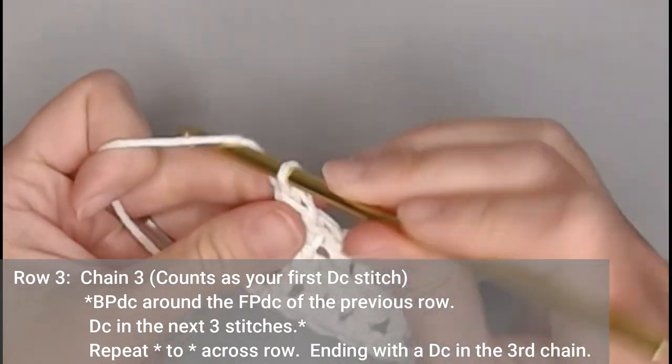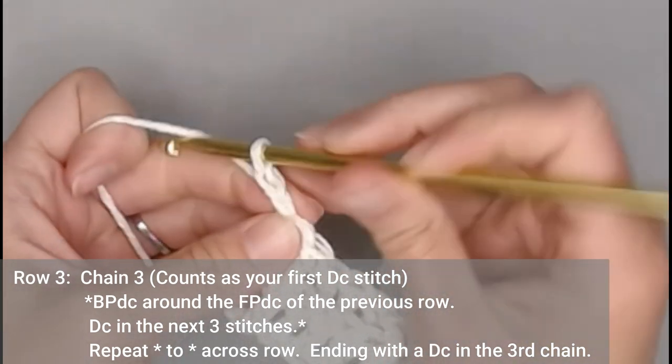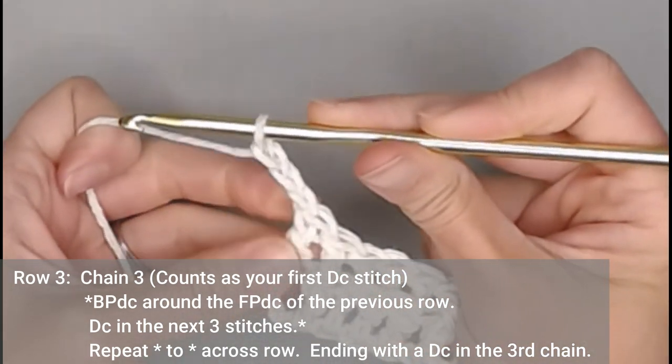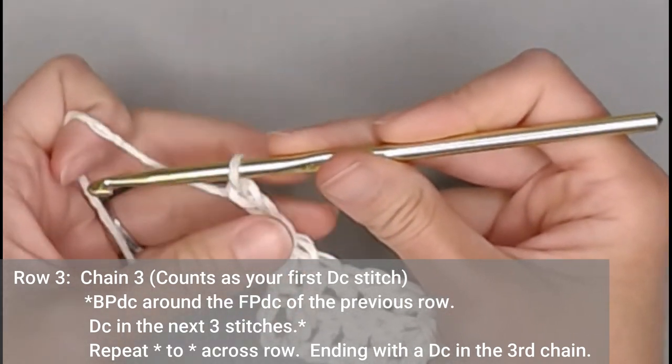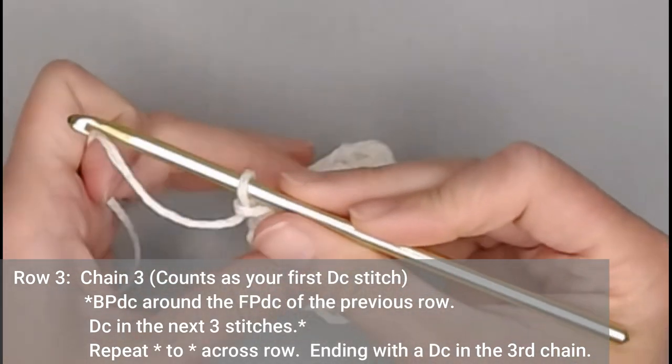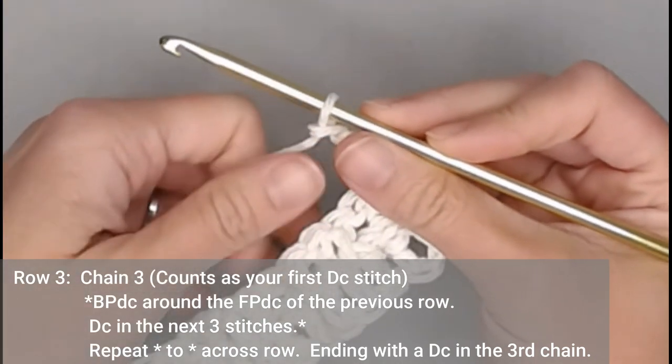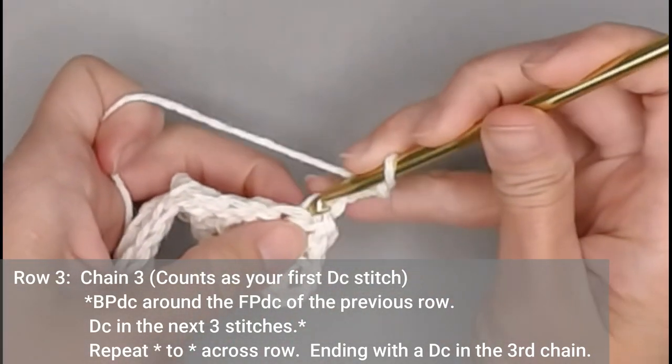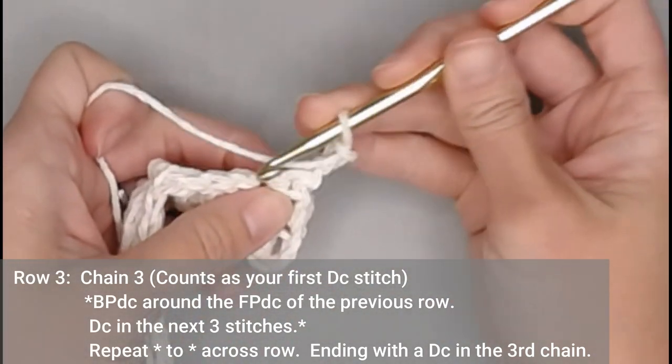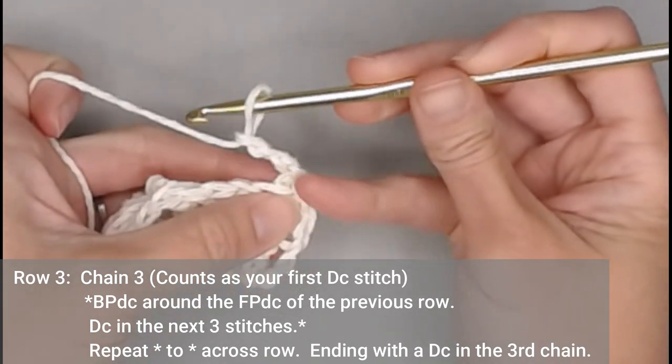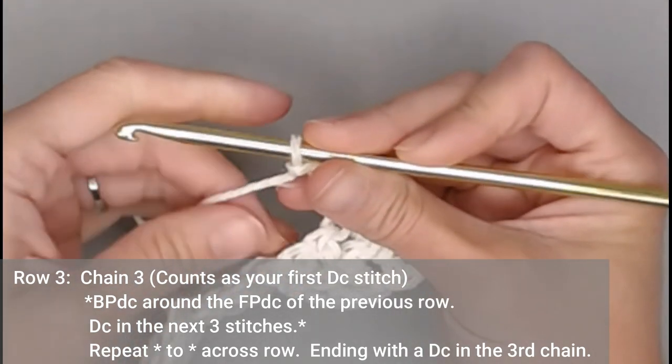For row three, again, we chain three. One, two, three. It's how you begin every row with a chain three. That chain three counts as a stitch of every row. We will skip that first double crochet stitch on the side. Because that chain three counts as the double crochet stitch, taking that space.